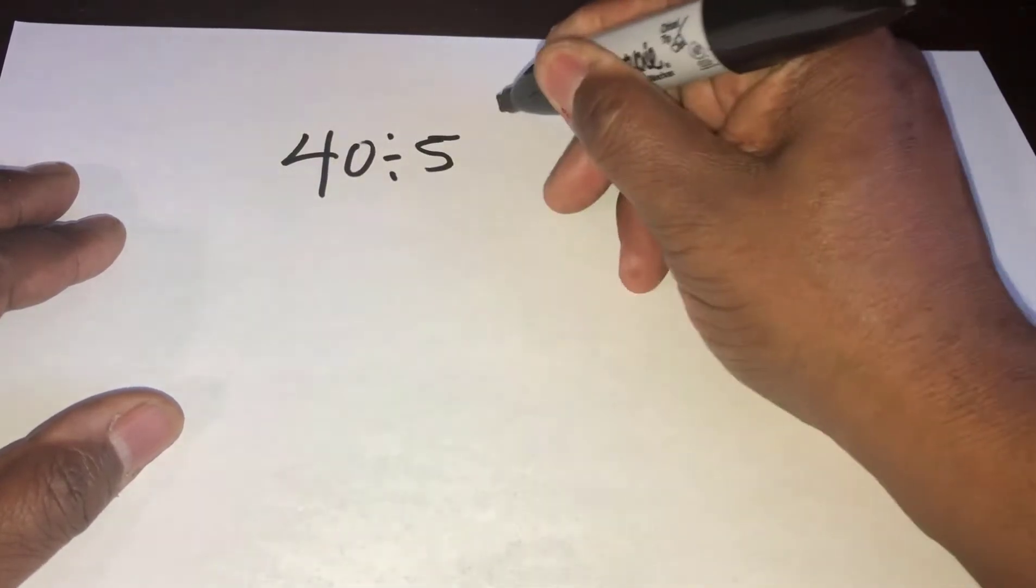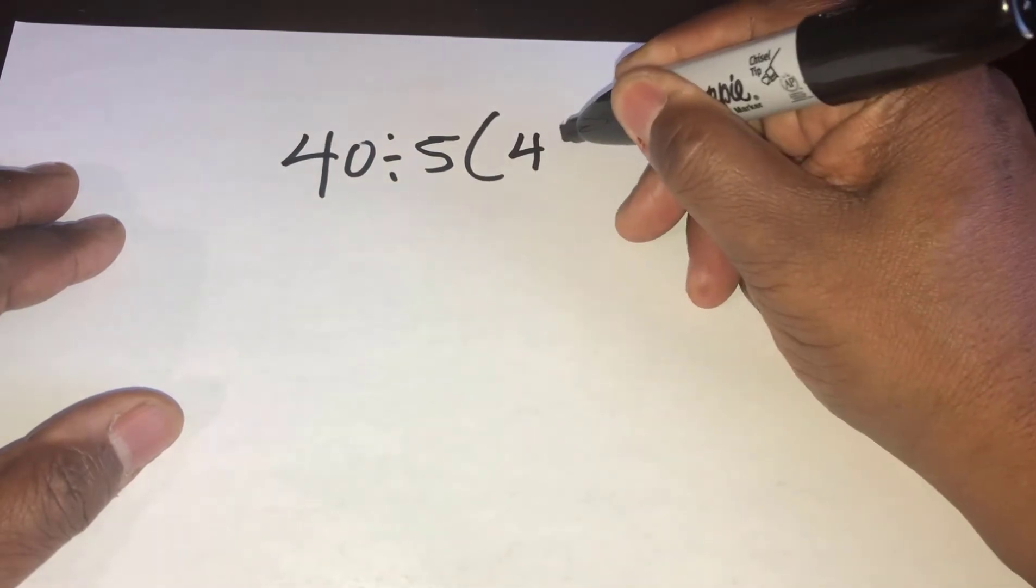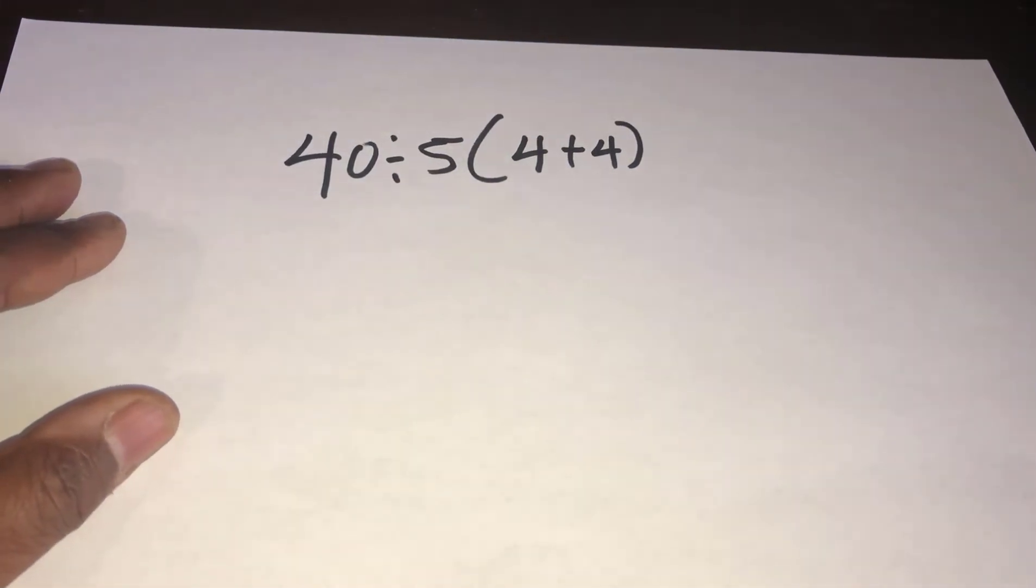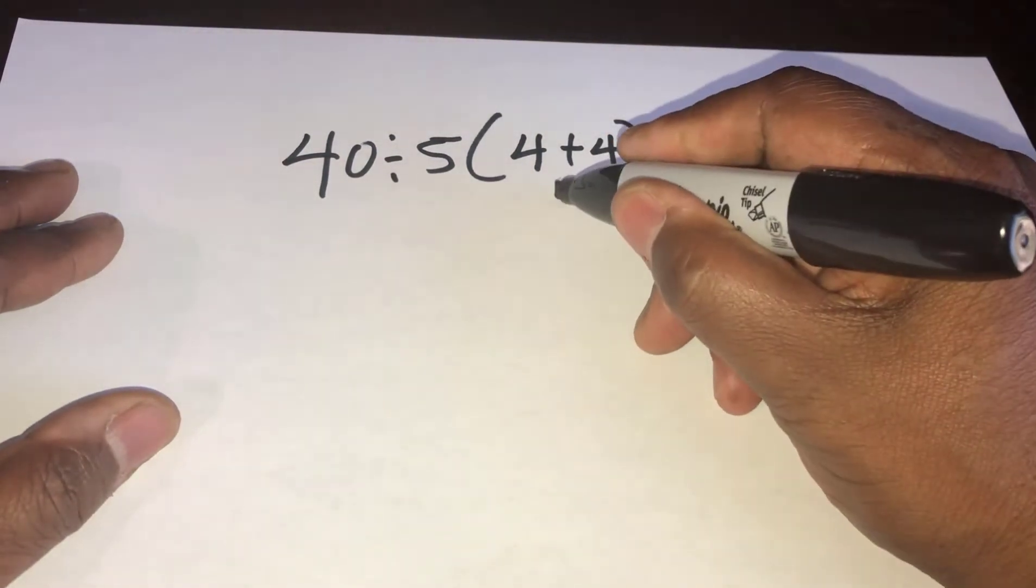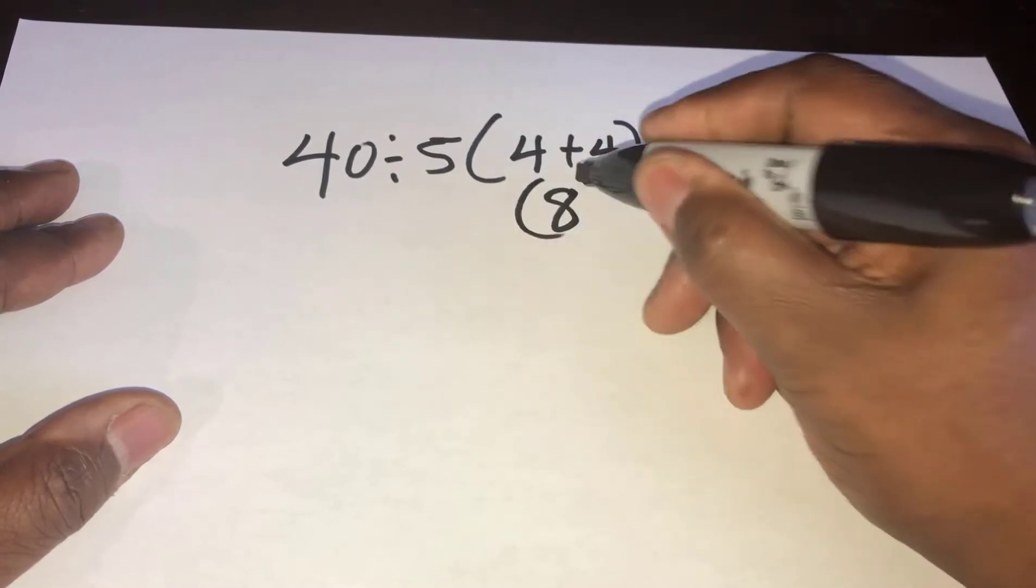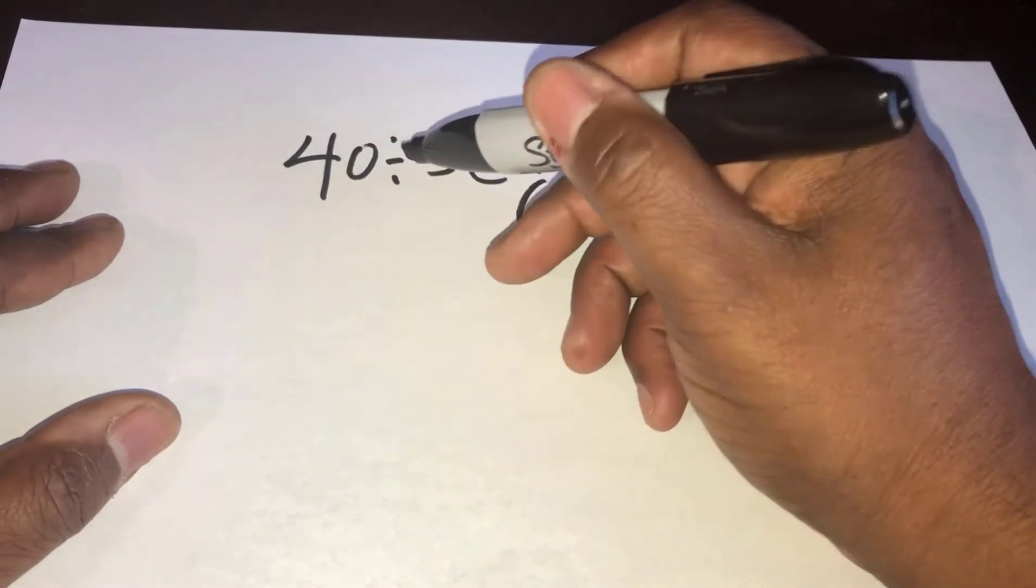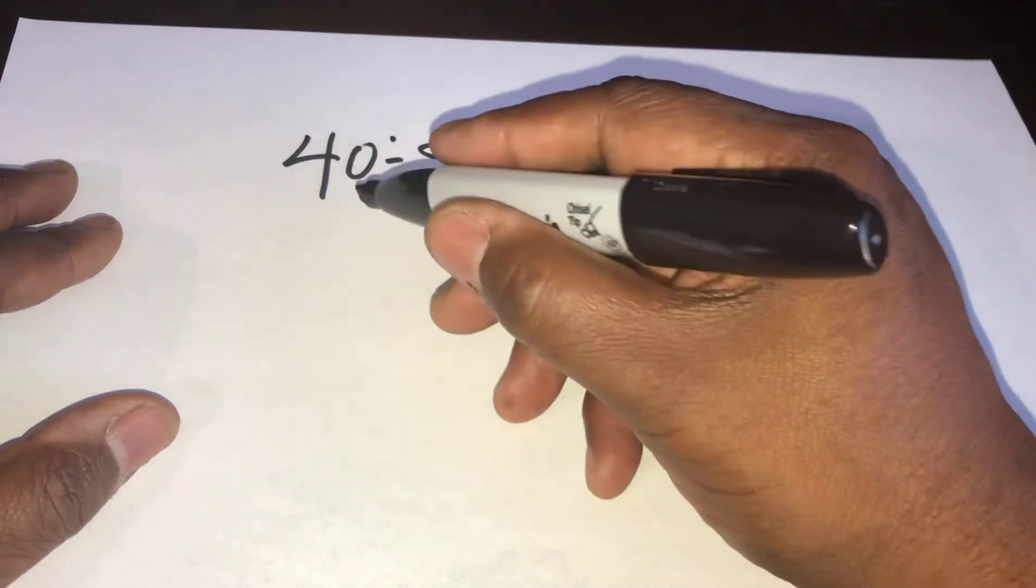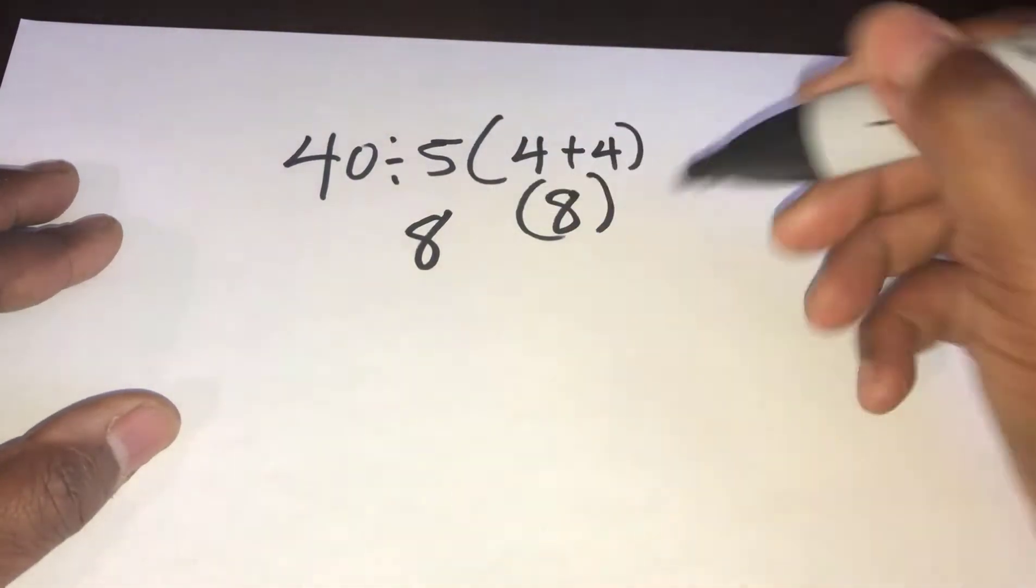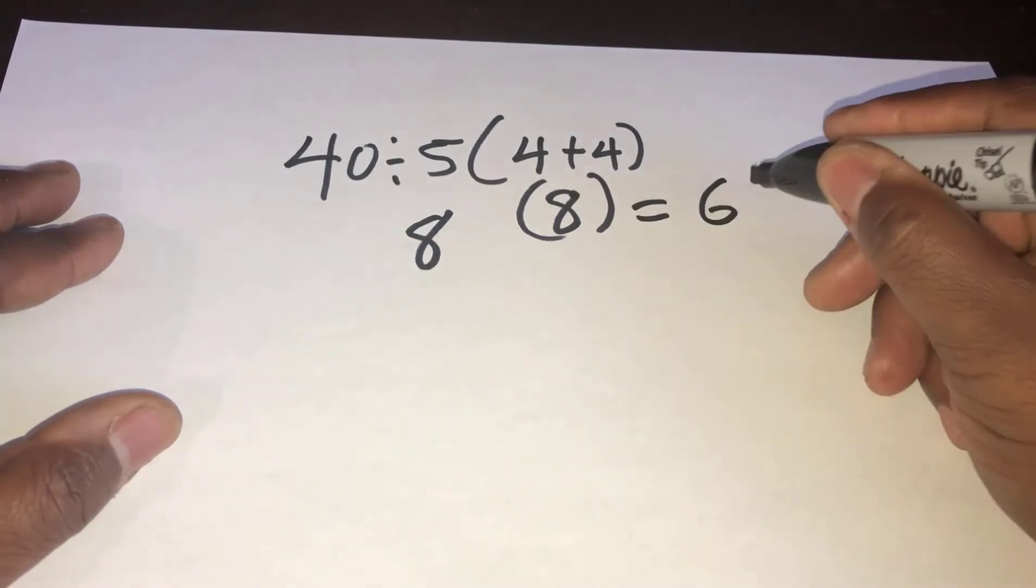Divided by 5 times 4 plus 4. Okay, some people do it like this - do it in parentheses first. That's how we were always taught back in the day. So 4 plus 4 is 8. Then you got your 40 divided by 5, so 40 divided by 5 is 8, and 8 times 8 equals 64.